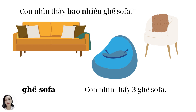Sometimes we see very big ghế xô pha, right? Sometimes we see just small ghế xô pha, right. So how many ghế xô pha do you see? We say you see ba ghế xô pha, right? Một ghế xô pha màu vàng. Một ghế xô pha màu xanh dương. And một ghế xô pha màu trắng, right? Yes, easy.